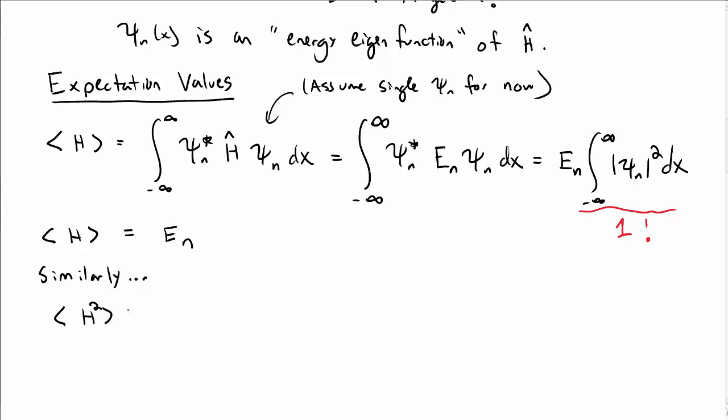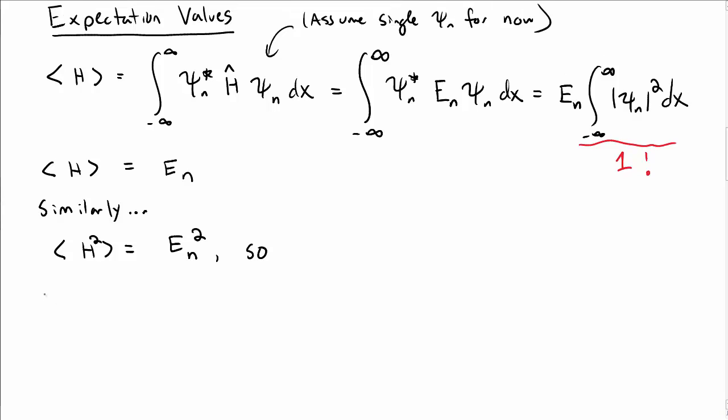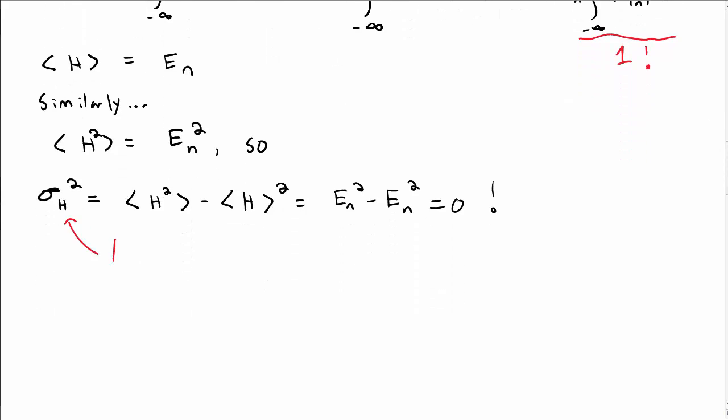By a similar set of reasoning, the expectation value of h squared will give you e sub n squared. So the variance sigma h squared, which is the expectation value of h squared minus expectation value of h all squared, just gives us zero. That tells us since the variance is zero that there's no spread in the energy for the wave function psi sub n. If you make a measurement of the energy of that wave function, you will always measure e sub n every time. There's no variance at all.